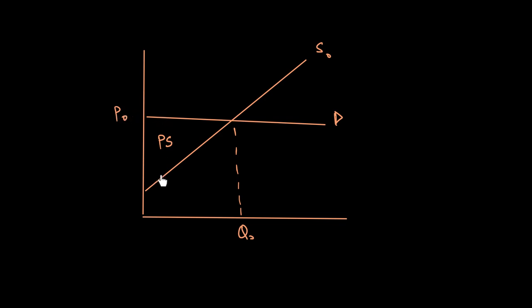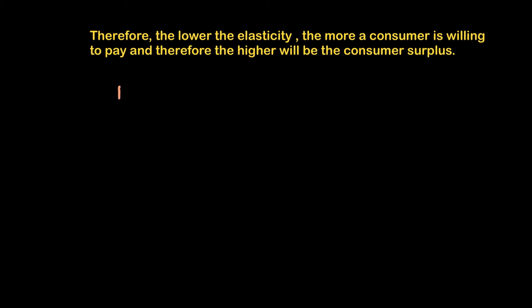While consumer surplus is zero, there may be some producer surplus — the area under the demand curve above the supply curve. From this discussion, when the price elasticity of demand for a good is low, consumers are willing to pay much more. Therefore, the lower the elasticity of demand, the more consumers are willing to pay, and the higher the consumer surplus — an inverse relationship where lower PED leads to higher consumer surplus.